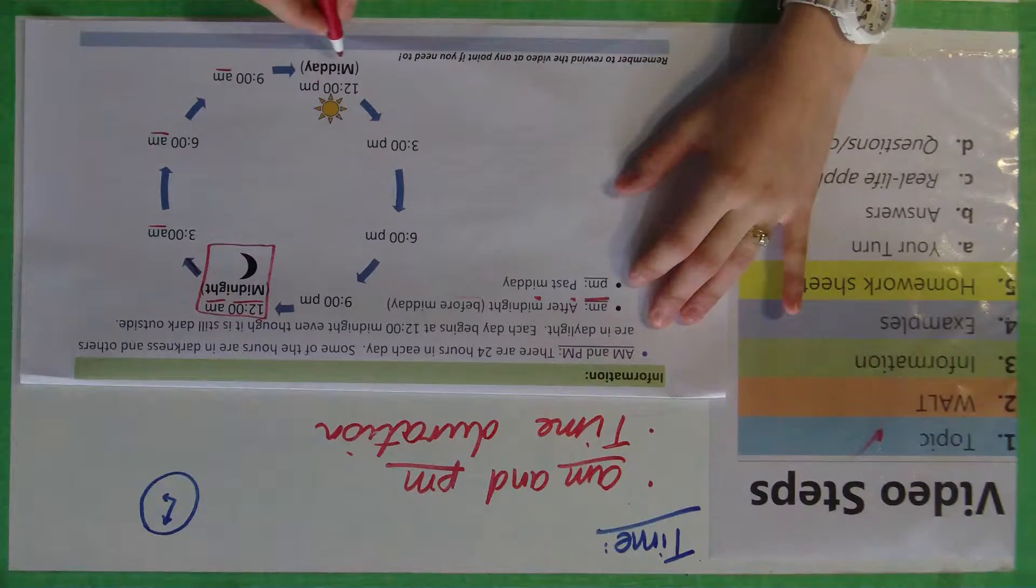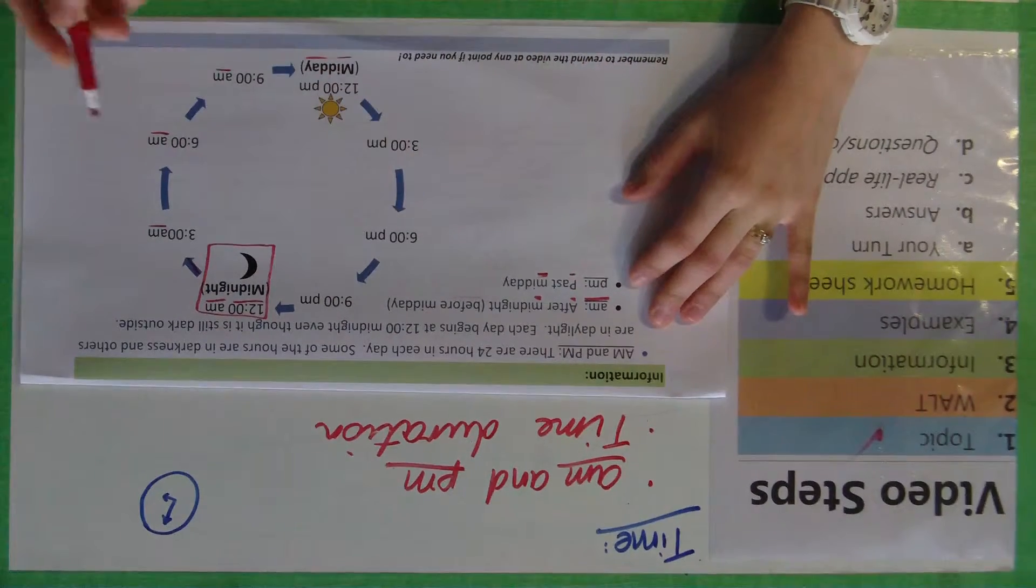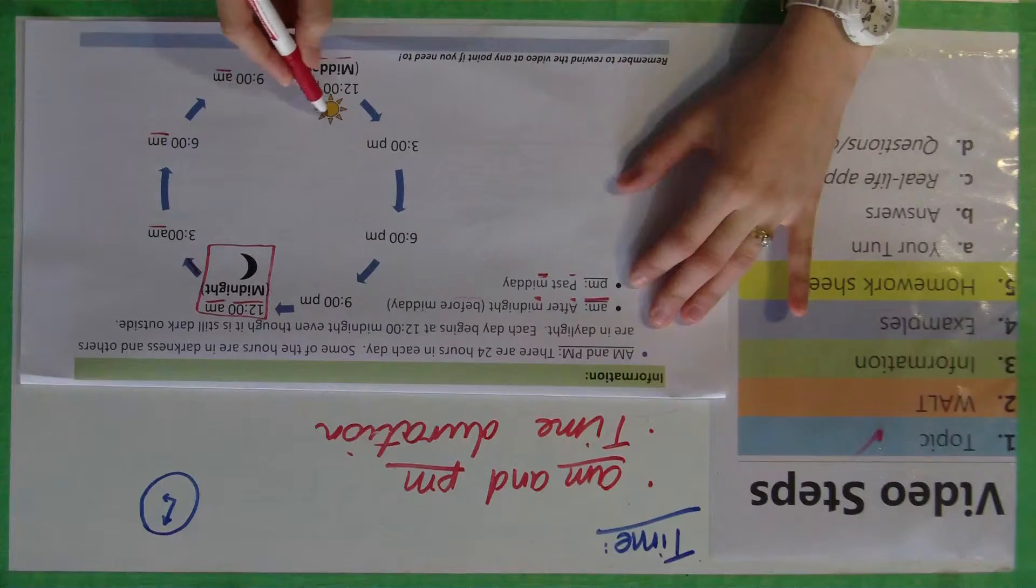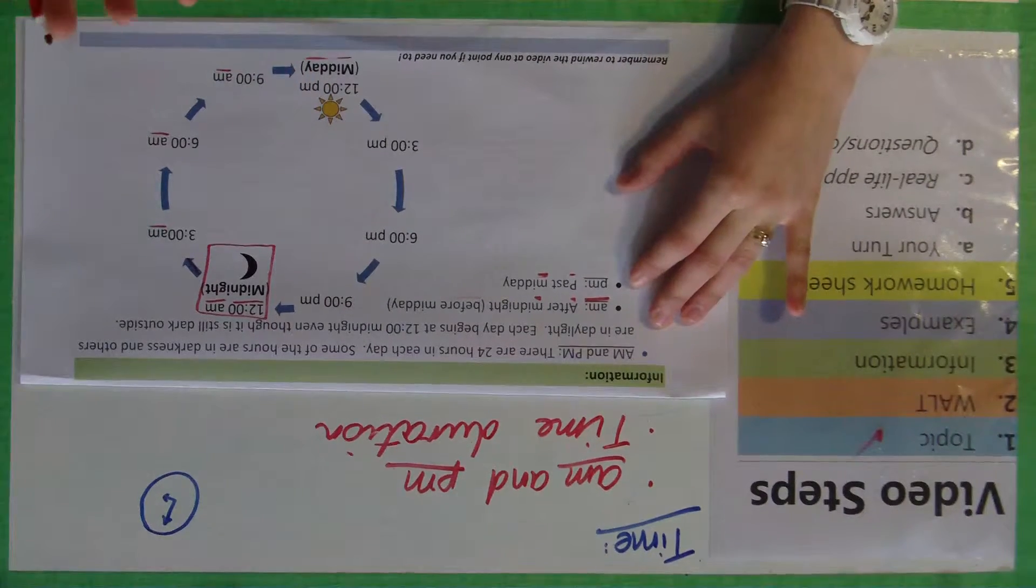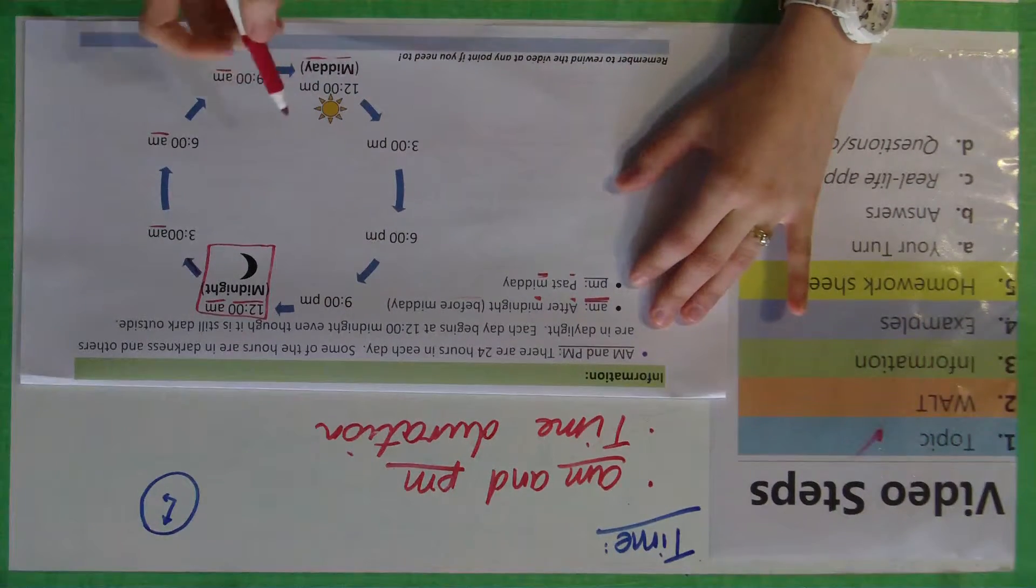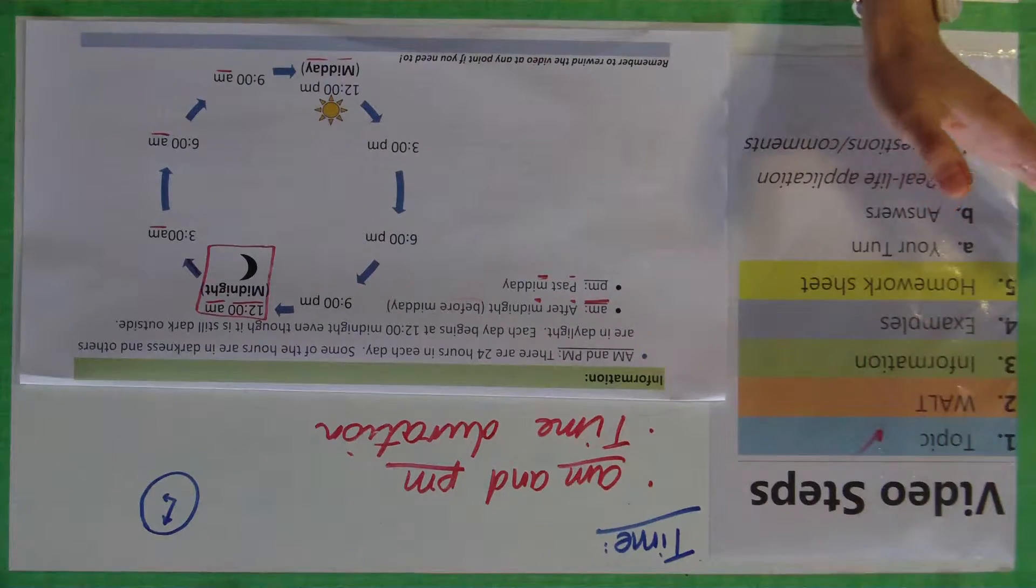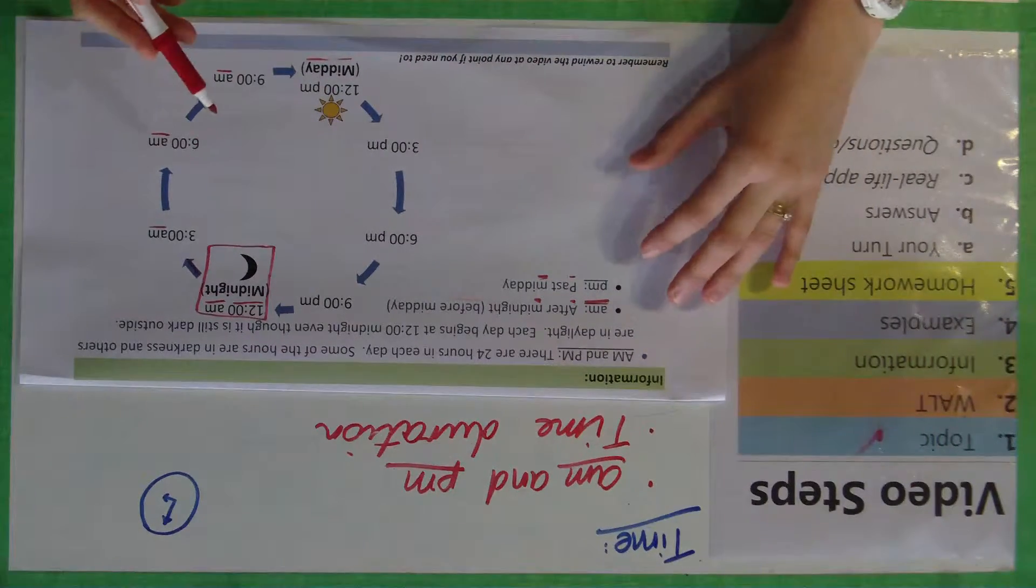And then it becomes midday, and that's past midday. So as soon as it hits midday, so 12 o'clock, it becomes past midday. So that's when the beautiful sun's out if it's a sunny day, and it's the middle of the day. This is usually when we have lunch at school.